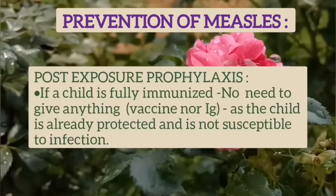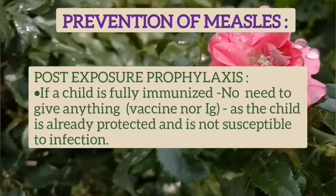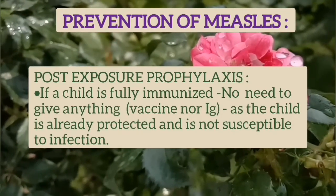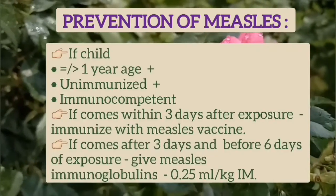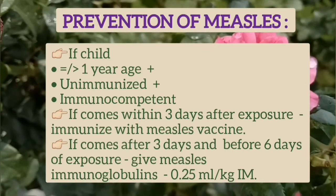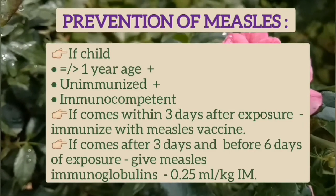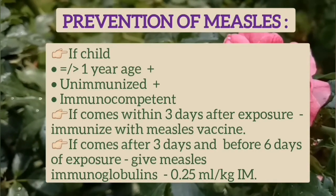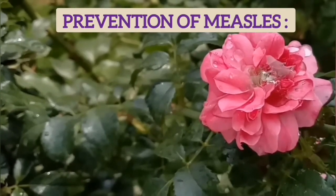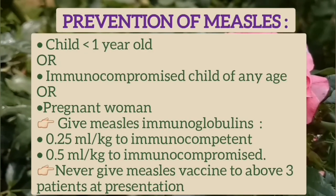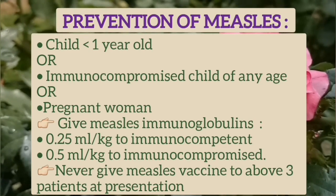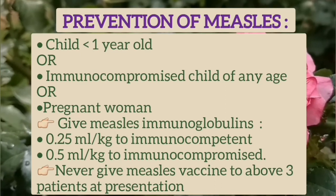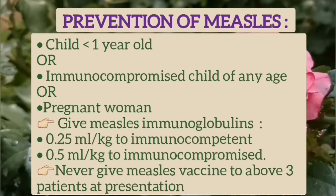For post-exposure prophylaxis: if a child is fully immunized, no vaccine or immunoglobulin is needed. If a child is 1 year or more, unimmunized, and immunocompetent, and presents within 3 days of exposure, measles vaccine should be given. If presenting between 3 and 6 days after exposure, measles immunoglobulin should be given at 0.25 ml/kg intramuscularly. If the child is younger than 1 year, immunocompromised of any age, or a pregnant woman, measles immunoglobulin should be given at 0.25 ml/kg to immunocompetent and 0.5 ml/kg to immunocompromised patients. Measles vaccine should never be given to these last three groups at presentation.